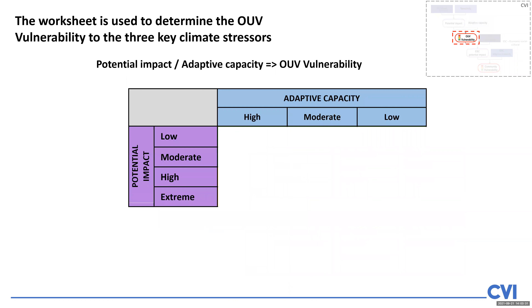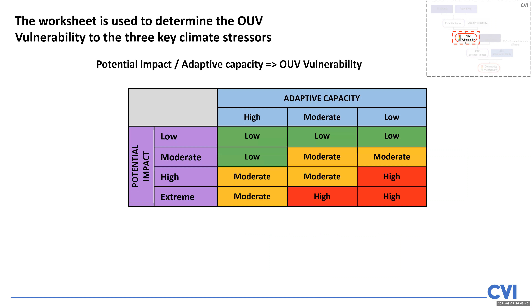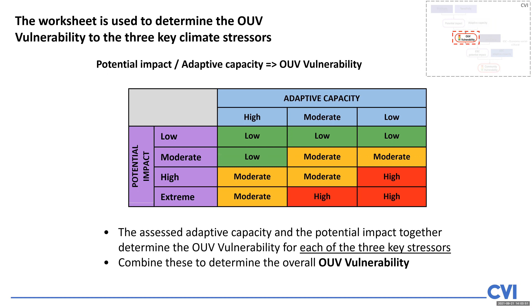Once we determine adaptive capacity, we can apply it in a matrix, looking also at the potential impact. We've determined potential impact by looking at both exposure and sensitivity. When we put it into a matrix against adaptive capacity, we can determine what level of OUV vulnerability we have. These different traffic lights are determined from both the adaptive capacity and the potential impact. We do this for each of the three key stressors, and then combine them to get the overall OUV vulnerability.